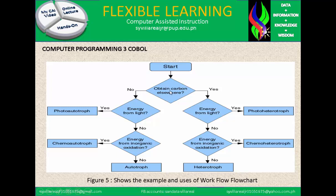The workflow flowchart example starts with: obtain carbon elsewhere — yes or no. If yes, energy from light leads to photo-heterotroph. If no, energy from inorganic oxidation leads to chemo-heterotroph, or if no again, heterotroph. If obtain carbon elsewhere is no: energy from light leads to photo-autotroph; if no, energy from inorganic oxidation leads to chemo-autotroph; if no, autotroph. That is the flow.